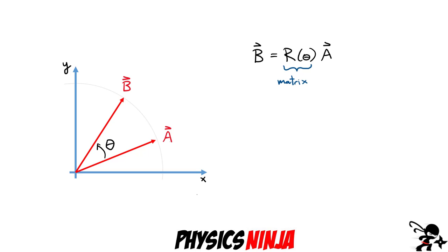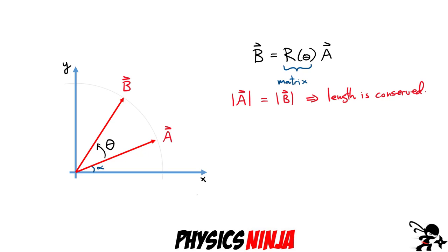To analyze this problem, we start with vector A and rotate it through some angle theta. Before writing anything down, I'm going to introduce another angle — let's call it alpha — which is the angle between vector A and the x-axis. One important property of this rotation is that both vectors must have the same length: the magnitude of A equals the magnitude of B, since we're only changing the orientation, not the length. This is what we call norm-conserving. I'll just call this common length the value A.